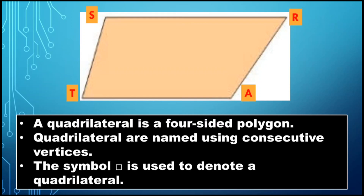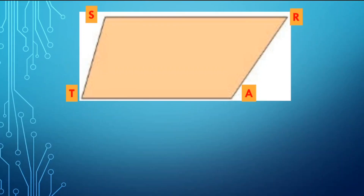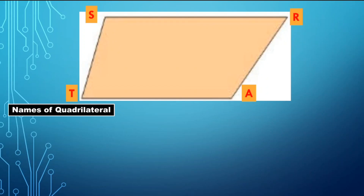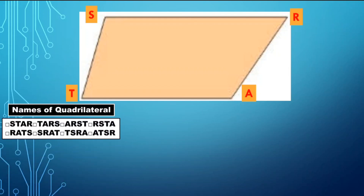The symbol shown is used to denote a quadrilateral. Based on this illustration, let us name the quadrilateral. It follows a particular direction — clockwise or counterclockwise. Using the counterclockwise direction, this could be quadrilateral STAR, quadrilateral TARS, quadrilateral ARST, and quadrilateral RSTA.